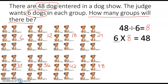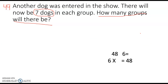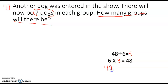In our last problem we did 48 divided by 6 and we got 8, or 6 times 8 equals 48. Our problem is going to look a little bit different this time. Now there are 49 dogs, and we're dividing them into groups of 7.